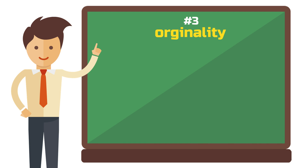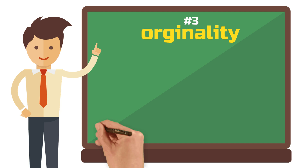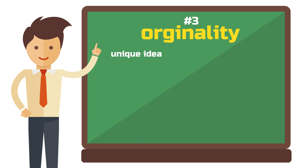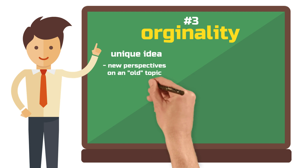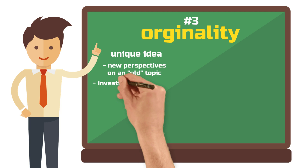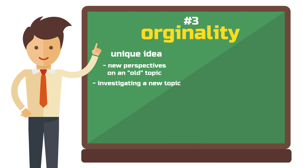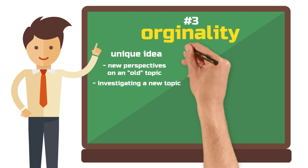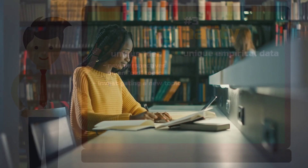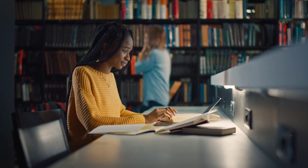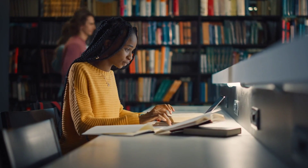Difference number three: the originality of your thesis. Originality can mean two things. First, it can mean that you are pursuing a really unique idea — bringing together different perspectives on an old topic or investigating an entirely new topic. Second, originality can also mean doing original research, collecting unique empirical data that no one else has collected. In a master's thesis, collecting original data is great, but it is not a must.